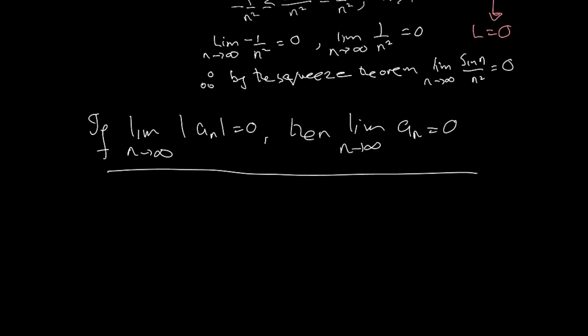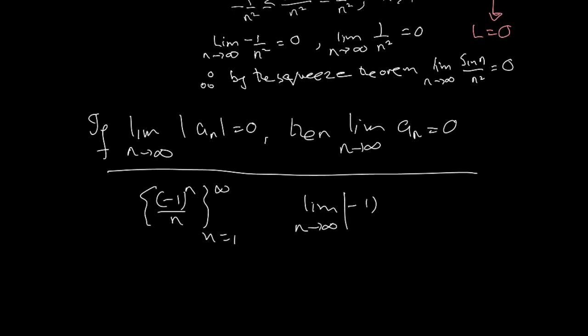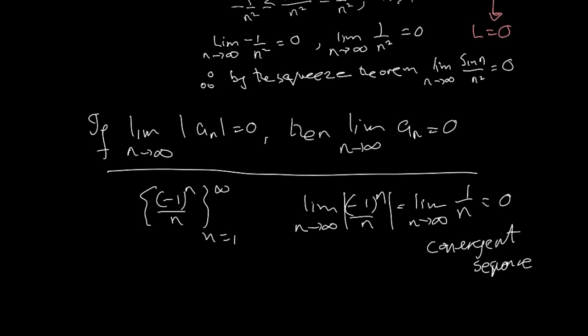Here's an extra rule to keep in mind: sometimes it may be a good idea to use this approach for an alternating sequence — one that alternates sign between minus one and plus one. For instance, I can take the limit of the absolute value of (−1)ⁿ over n, which is really just the limit as n goes to infinity of one over n, and that equals zero. So by simply looking at the absolute value, you can prove convergence.